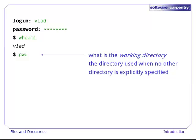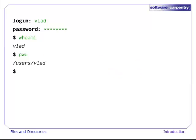The computer's response is slash users slash vlad. To understand what this means, let's have a look at how the file system as a whole is organized.